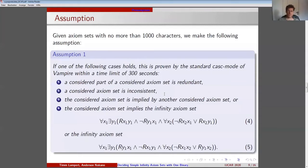The restriction of axiom sets with no more than 1000 characters allows us to make use of the following assumption. If one of the following cases holds, this is proven by the standard CASC mode of Vampire within a time limit of 300 seconds. First, a considered part of a considered axiom set is redundant. Second, a considered axiom set is inconsistent. Third, the considered axiom set is implied by another considered axiom set. Fourth, the considered axiom set implies the infinity axiom set 4 or infinity axiom set 5.